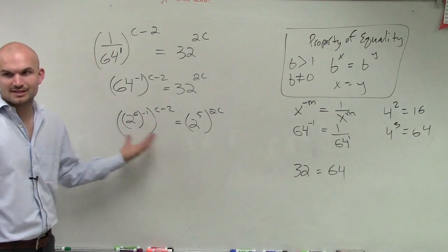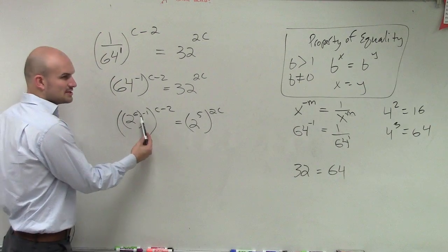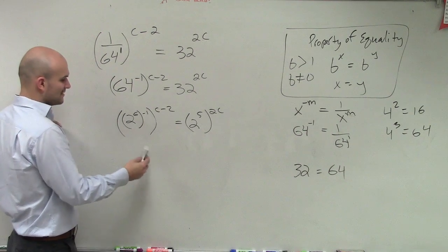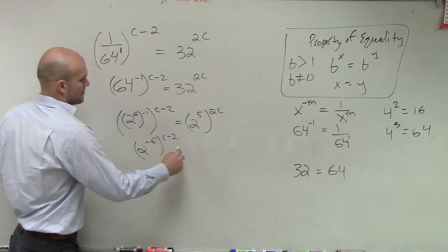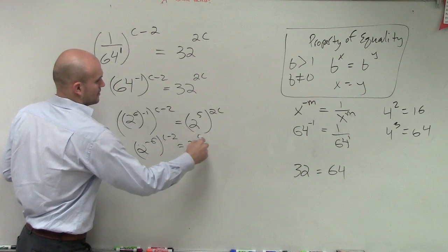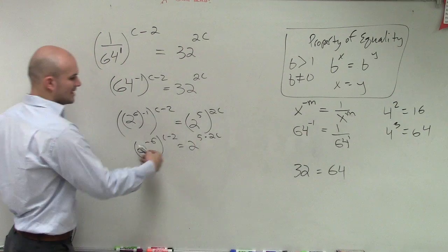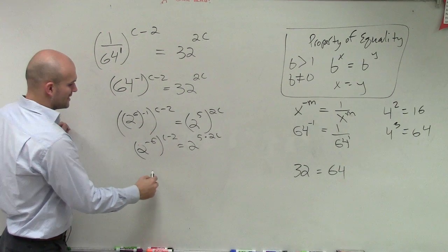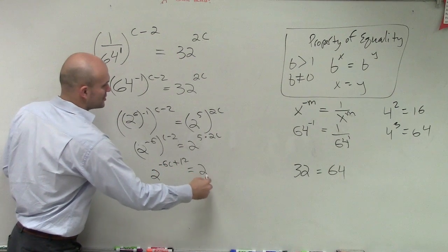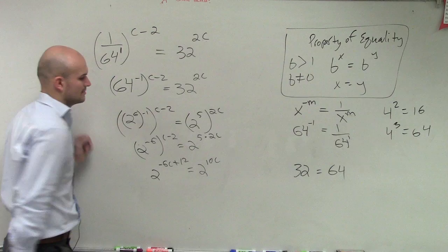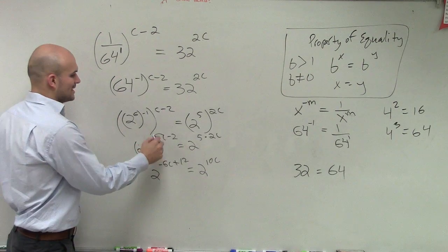Now let's use the power of power rule. 6 times negative 2 gives 2 to the negative 12. Then I do this again. So therefore I get 2 to the negative 6c plus 12 equals 2 to the 10c. Alright? I'm just now applying multiplication.